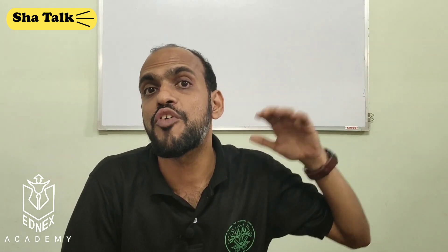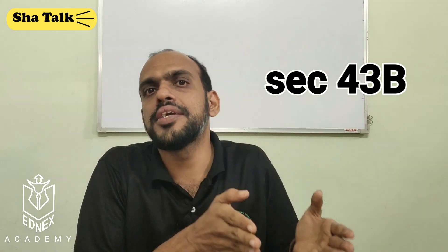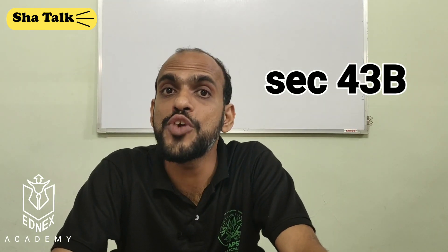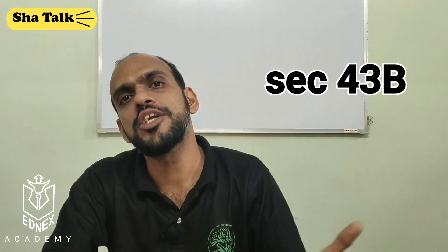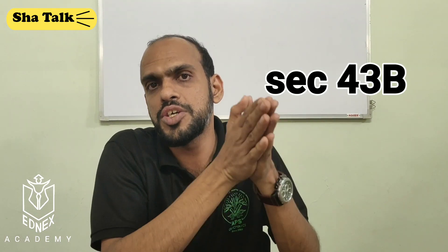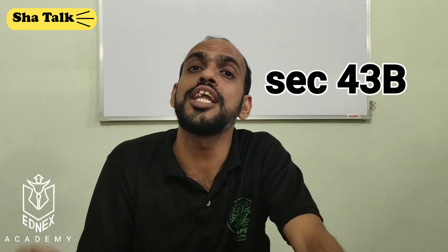The next change is under Section 43B. If you have any expenditure listed in Section 43B outstanding at 31st March year-end, it is deductible only if you make payment before the due date of filing of return. Previously, interest on borrowings to banks was included. Now, interest on borrowings to NBFC (Non-Banking Financial Companies) is also added to that list. Any outstanding interest payable to an NBFC at 31st March can be deducted only by making payment on or before the due date of filing of return.